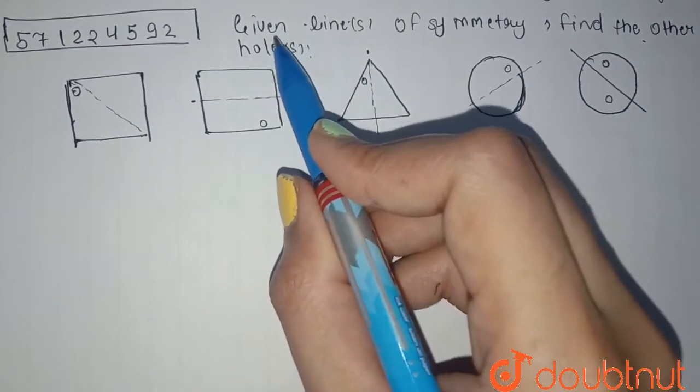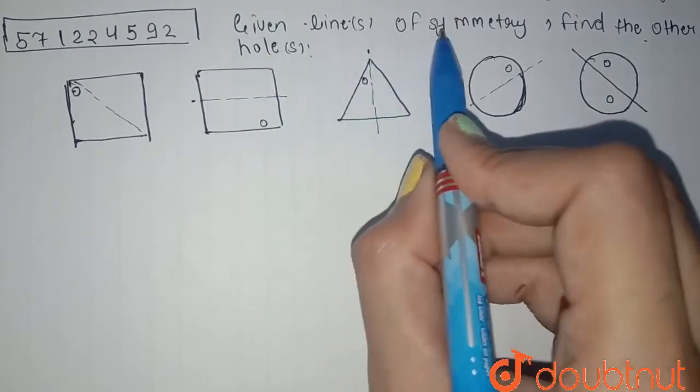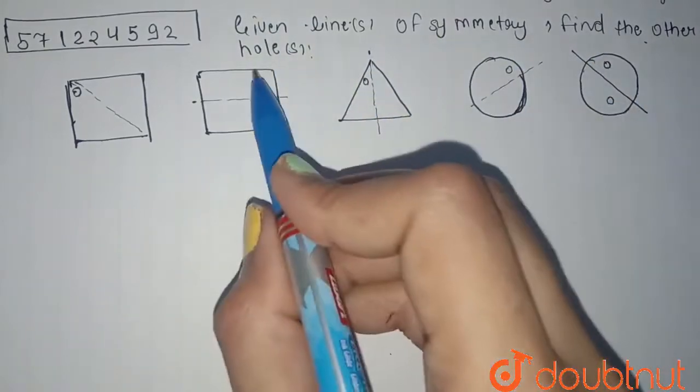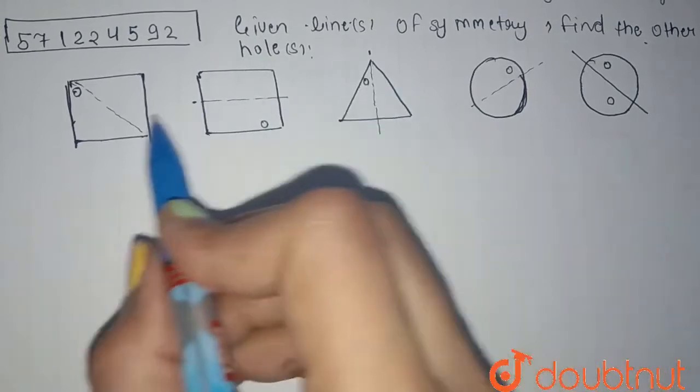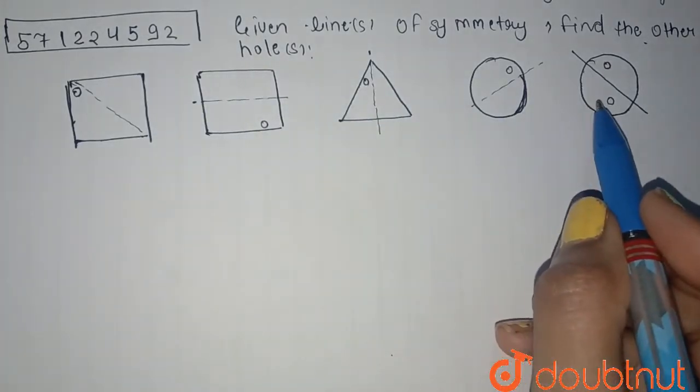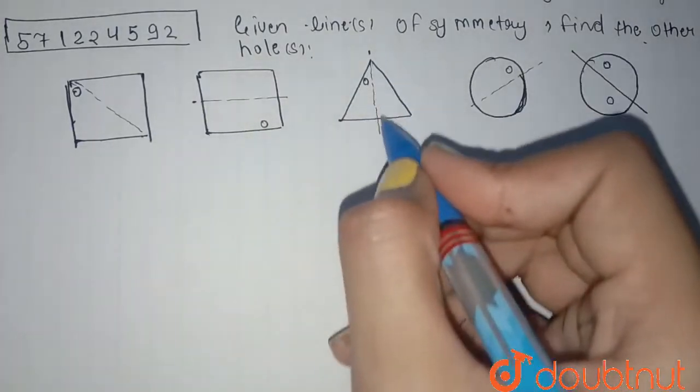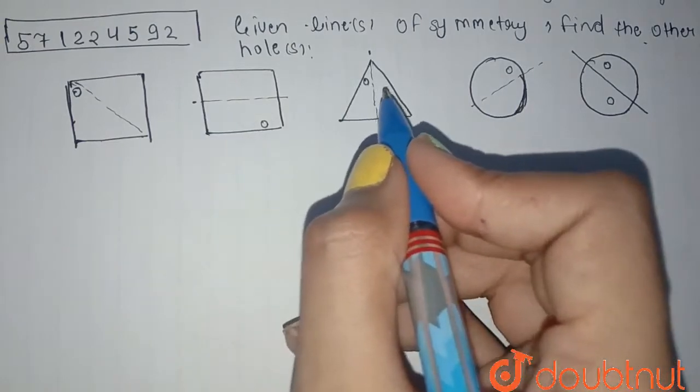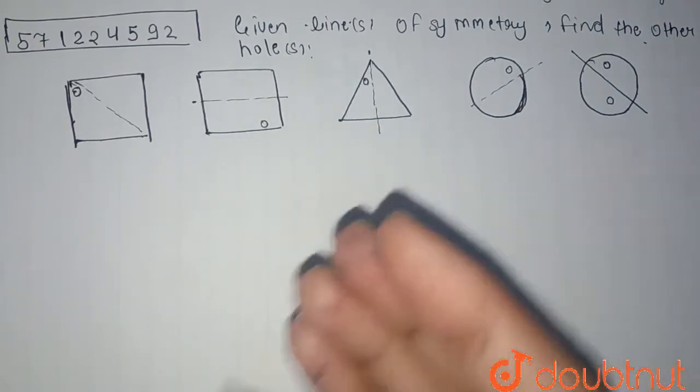is from symmetry. The question given is: given line of symmetry, find the other holes. So in each of these figures, we can see we are given the line of symmetry. Line of symmetry is the line which reflects, which kind of divides the figure into two equal parts. Okay, so here if you want that it to be